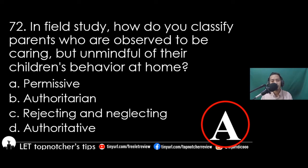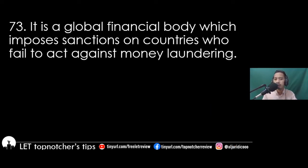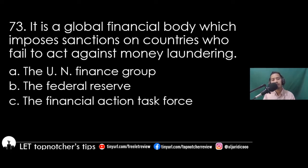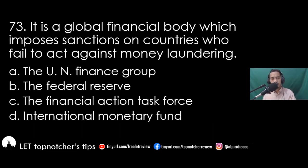Item 73: It is a global financial body which imposes sanctions on countries who fail to act against money laundering. A) the UN Finance Group, B) the Federal Reserve, C) the Financial Action Task Force, D) International Monetary Fund. The best answer is letter A, the International Monetary Fund.